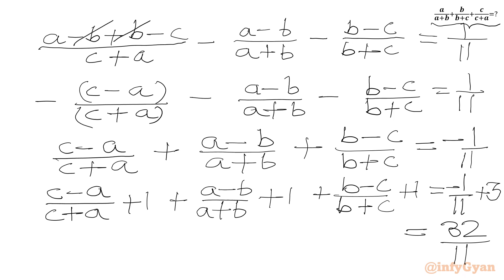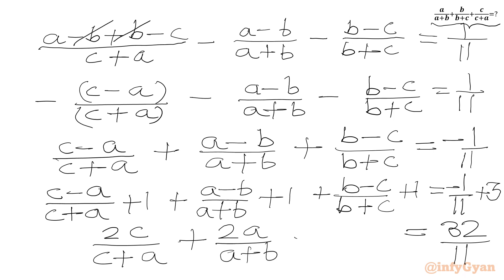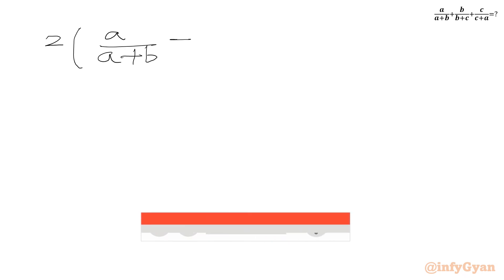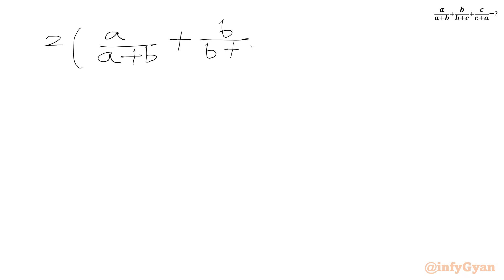On the left-hand side, (c-a) plus (c+a) gives 2c over (c+a), matching the required term c/(c+a). Similarly, (a-b) plus (a+b) gives 2a over (a+b). And (b-c) plus (b+c) gives 2b over (b+c). We can take 2 common from the LHS, writing 2 times [a/(a+b) + b/(b+c) + c/(c+a)], which is our required expression E.